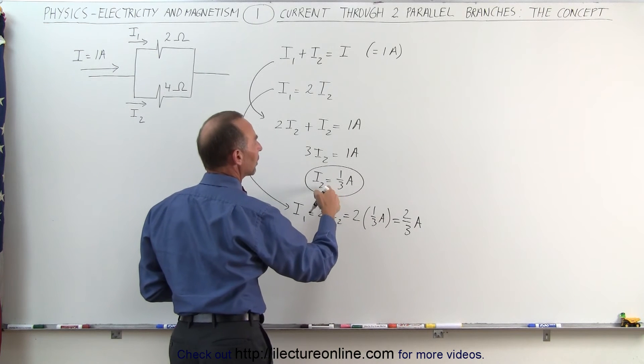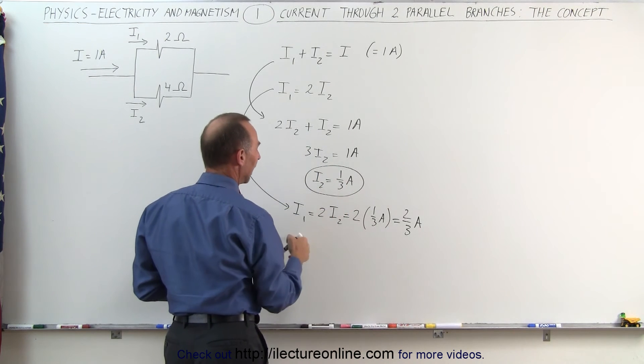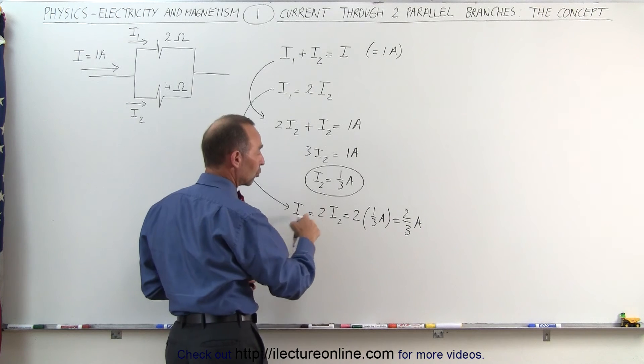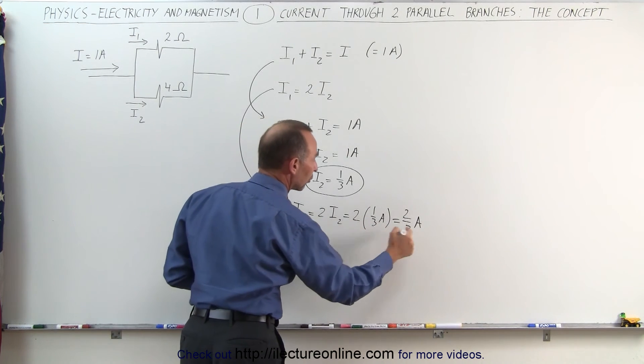Which means that the bottom branch, since it has twice the resistance, will carry one-third of an amp, and the top branch, since it has half the resistance, will carry twice as much current, or two-thirds of an amp.